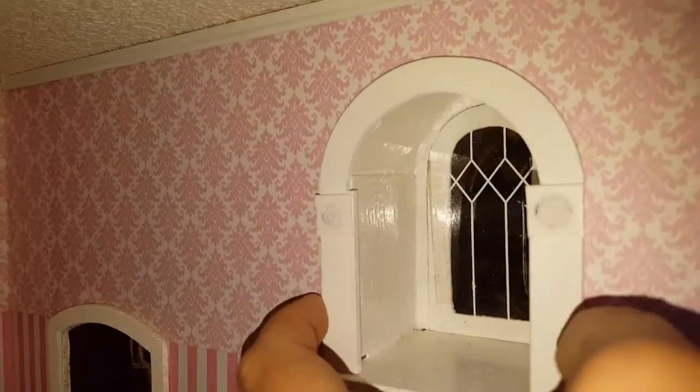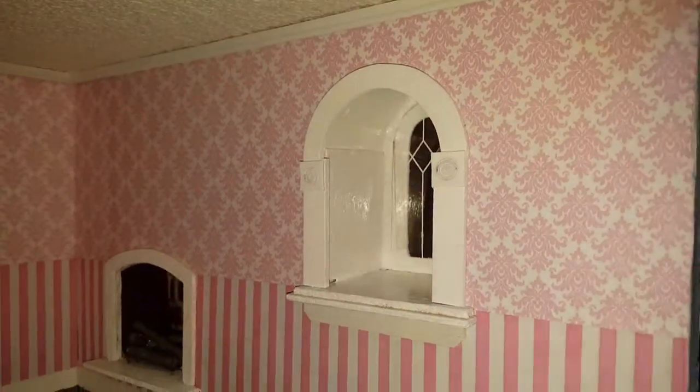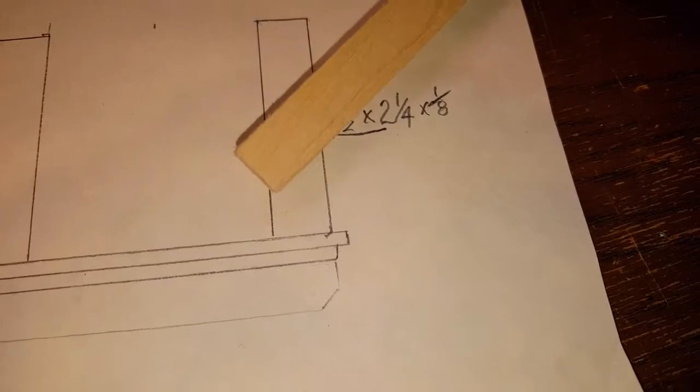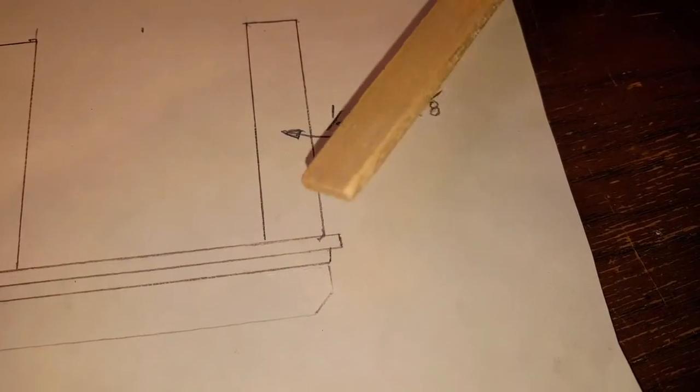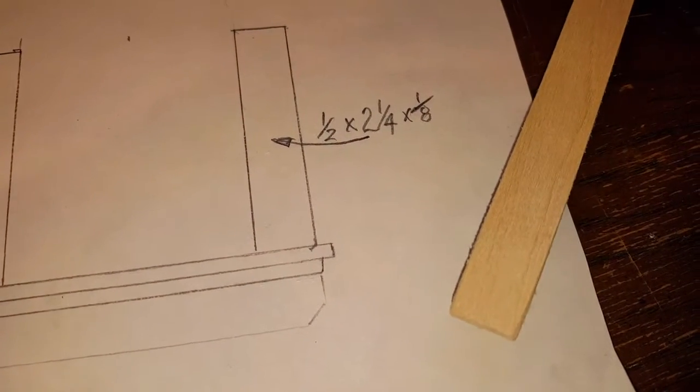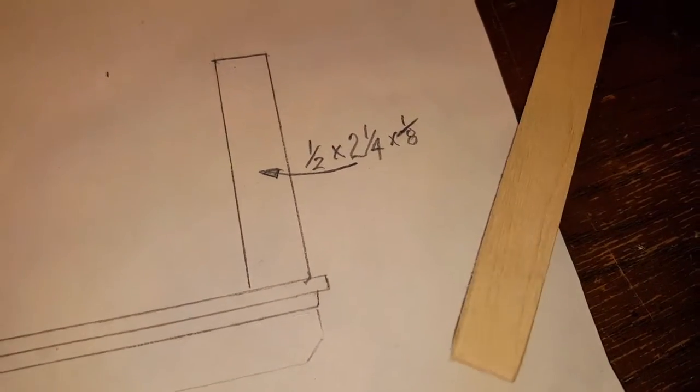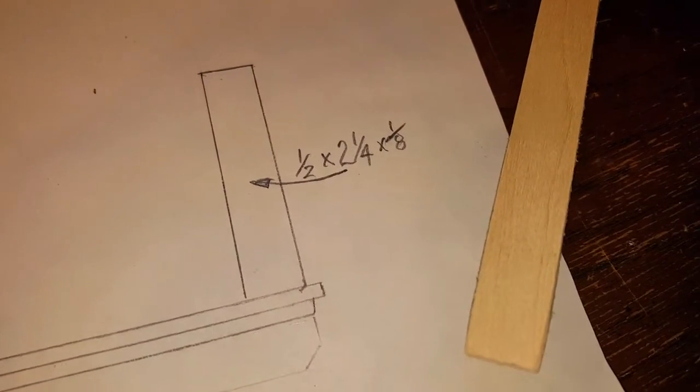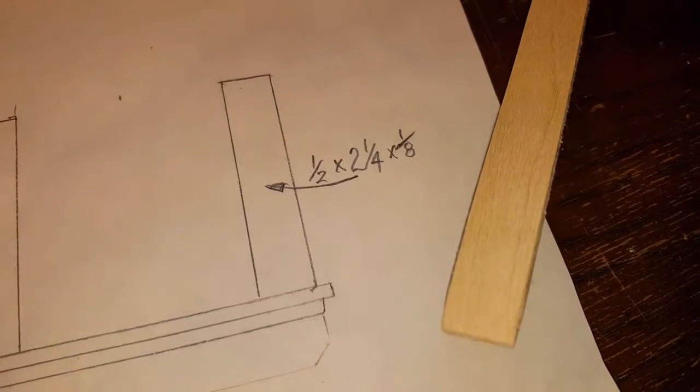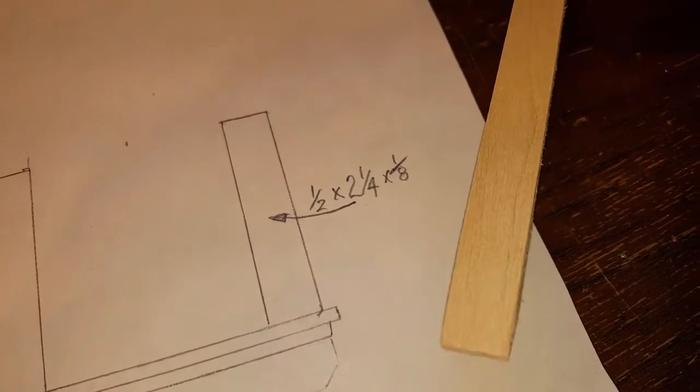Okay, so we're using a thin piece of wood that is one half inch by two and a quarter inch by one eighth inch thick. If you don't have the ability to cut or you don't have a way to cut it up, you could always use mat board and do it with that.